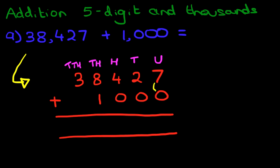Well, the first three columns here, the units, we're adding 0, 0, 0. So the numbers remain the same. The units remain as 7. The tens remain as 2. And the hundreds remain as 4.